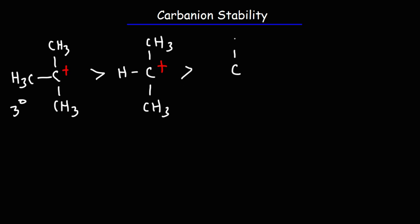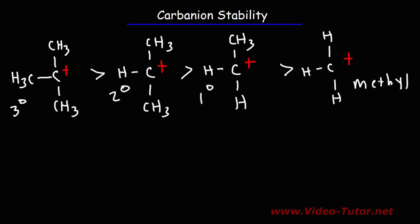Now, tertiary carbocations are more stable than secondary or primary carbocations. And there's two reasons for this: the hyperconjugation effect and the inductive effect. So make sure you understand that. Tertiary carbocations are more stable than secondary carbocations, which are more stable than primary. And methyl carbocations are the least stable out of this group.